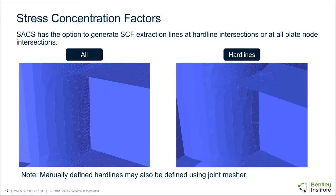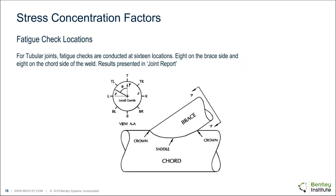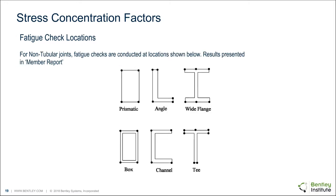If you're interested in a certain location, you can manually add a hard line there. For tubulars, you have eight points at the crown, saddle, and midpoints between those. For non-tubulars, you have specific defined points. When we do the hard line extraction, those are the points generated — and also the locations where you can define a stress concentration factor. If you add additional hard lines or use the 'all' option, you'll need to determine where to place those SCFs in relation to the available options in the fatigue input.